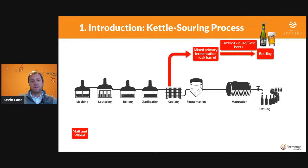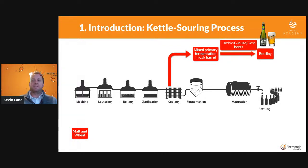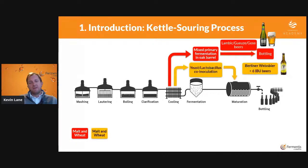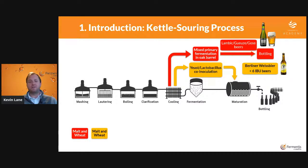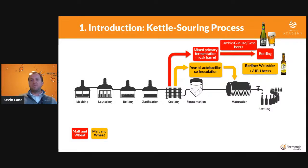But today we're talking about sour beer. To point out a few different types: you can do primary mixed fermentation, potentially in oak barrels for lambic or gueuze-type production. A second way is a co-inoculation of yeast and lactobacillus for Berliner Weisse-type beers. It's important to note that when you do a co-inoculation with bacteria, you target a very low IBU, because bacteria can't handle too much of the isomerized alpha acids or hop compounds.